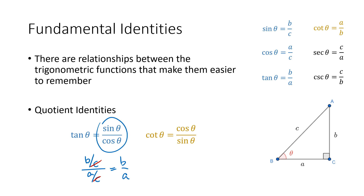Similarly, cosine of theta is a over c, and sine of theta is b over c. So if I multiply top and bottom by c, the c's will go away, and I end up with a over b, which is cotangent of theta.